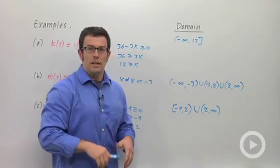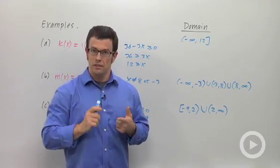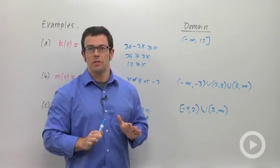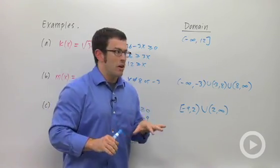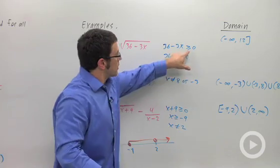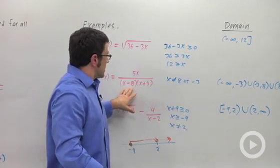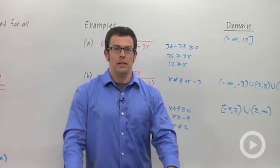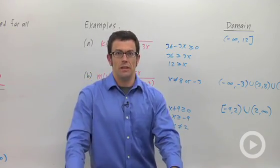So that's how we find domain. We basically look out for two things: division by 0 and a negative in the radical. We can't have either of those things. As long as you start off by saying whatever's in the radical has to be greater than or equal to 0, and whatever's in the denominator has to not equal 0, then you'll be easily able to find the domain of a function.